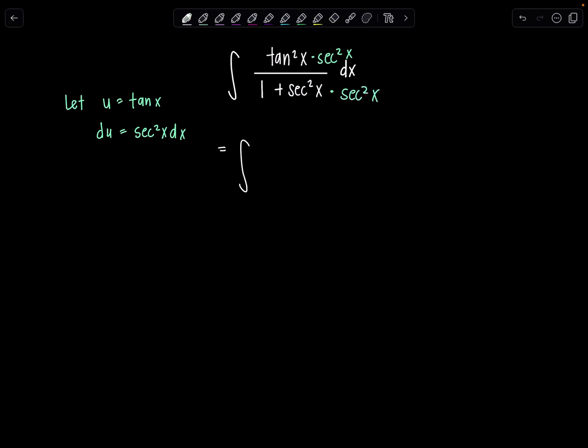So instead what we're going to do first is multiply numerator and denominator by secant squared x to make our math dreams come true. So here we're going to have integral tan squared x secant squared x dx over 1 plus secant squared x and then another secant squared x.